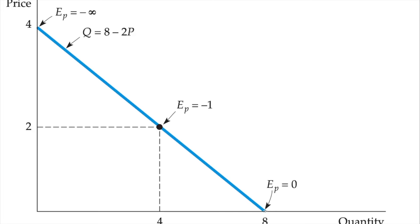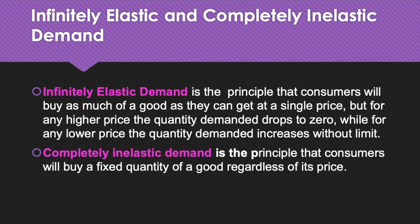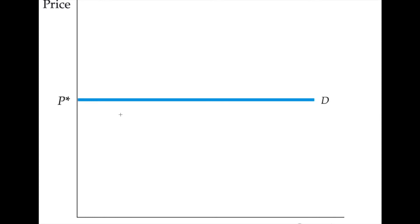Near the top of the curve, where price is high and quantity demanded is small, the elasticity is large in magnitude. The elasticity becomes smaller as we move down the curve. Infinitely elastic demand is the principle that consumers will buy as much of a good as they can get at a single price, but for any higher price the quantity demanded drops to 0, while for any lower price the quantity demanded increases without limit. In the earlier figure, when the price was at 4 the demand curve became infinitely elastic, and the demand curve in that case is horizontal with ΔQ/ΔP being infinite.